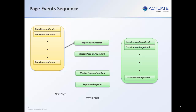After all items are created on a page, the on-page start event for the report will be called, followed by the on-page start event for the master page. Then the on-page break event is called for each item on a page. Finally, the on-page end event is called for the master page, then the report. The page gets written and BIRT goes to the next page.